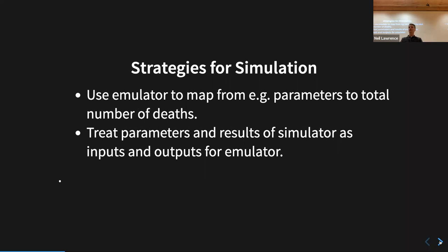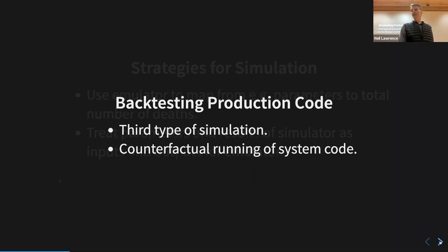The strategy for emulation is to map from the parameters to the total number of deaths, treating the parameters and results of the simulator as inputs and outputs for the emulator — a mathematical function. Let's assume it's going to be a Gaussian process, though you could use neural networks, linear models, or all sorts of things. That's the basic idea.